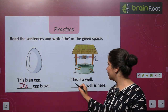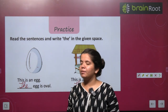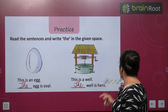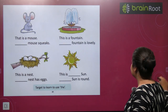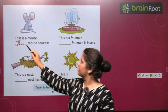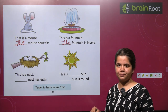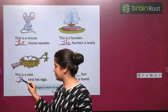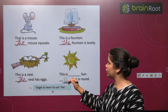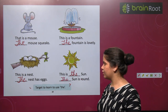This is a well. The well is here. This is the sun. The sun is not in the beach — remember that. This is the sun. The sun is round.